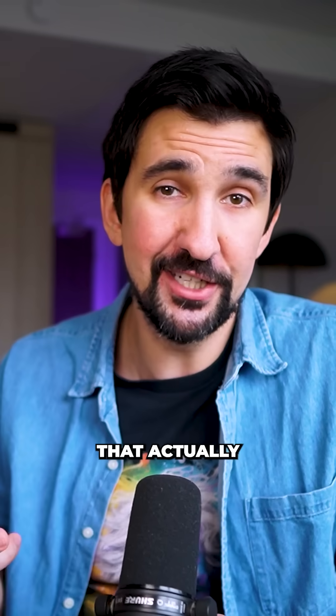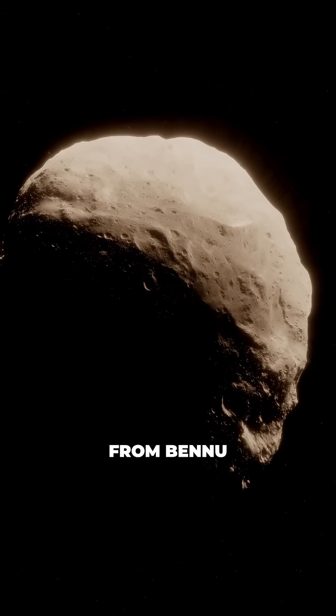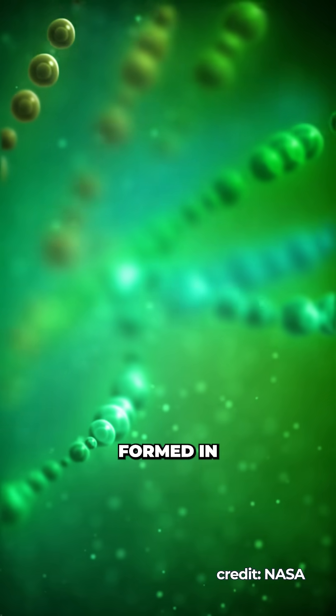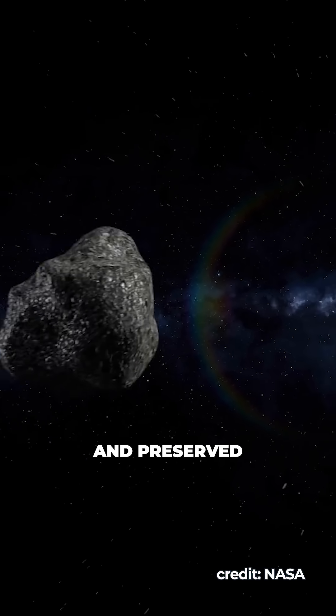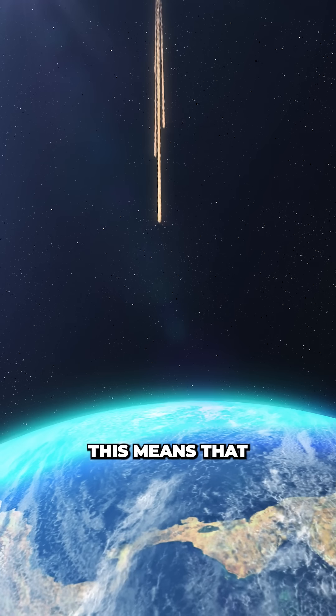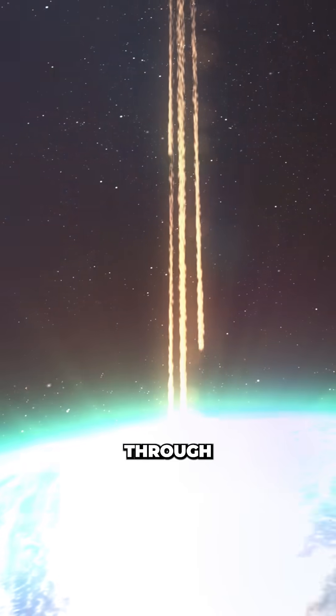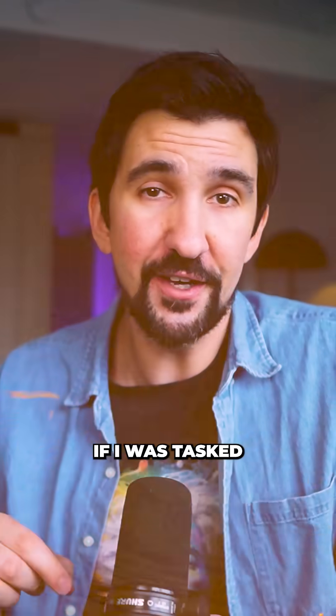But what does that actually all mean? The findings from Bennu suggest that the basic ingredients for life are naturally formed in space and preserved in asteroids. This means that early Earth might have received these vital prebiotic compounds through asteroid impacts.